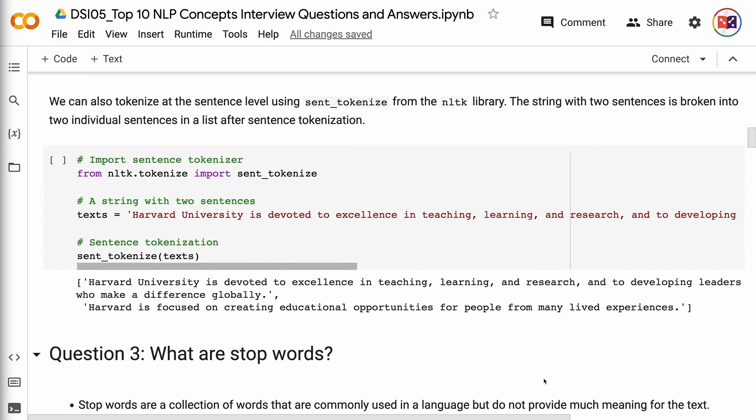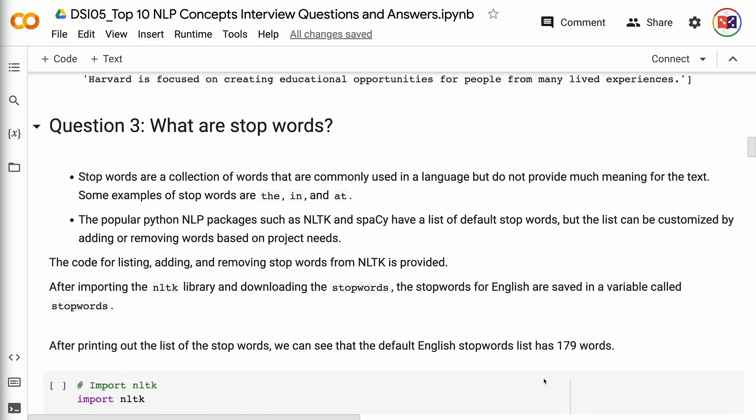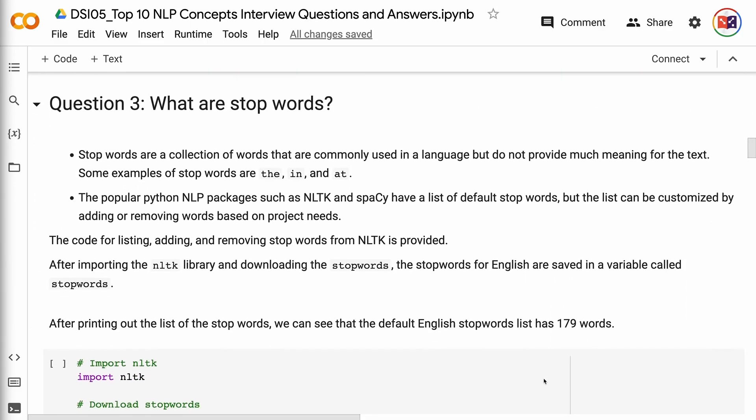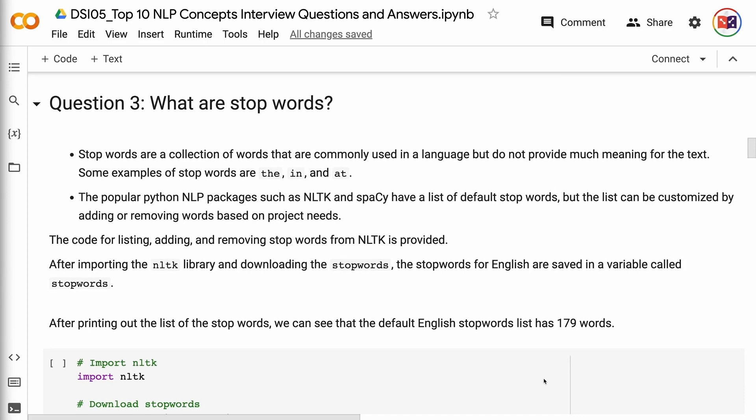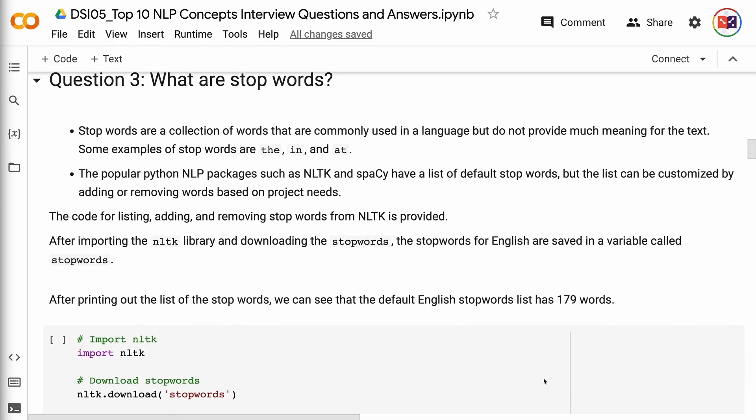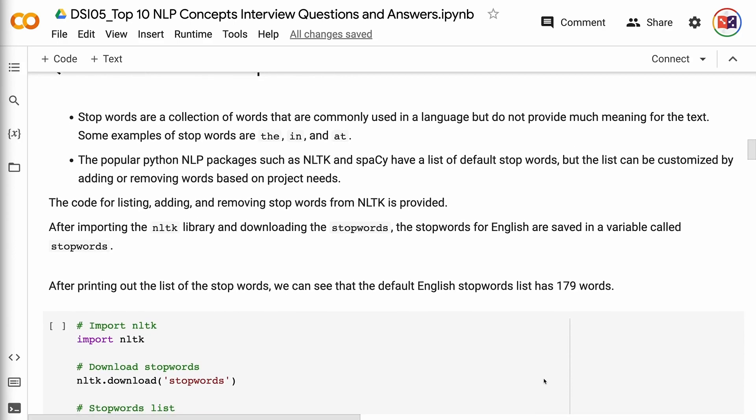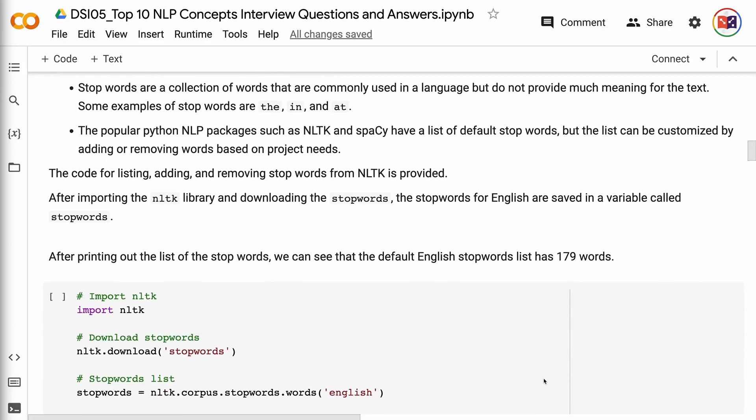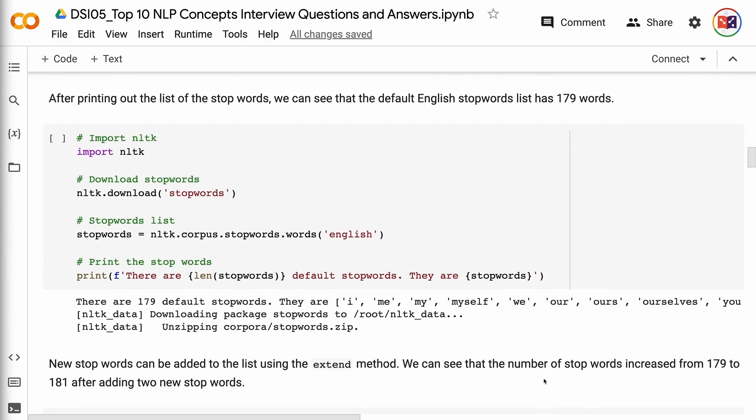Question 3: What are stop words? Stop words are a collection of words that are commonly used in a language but do not provide much meaning for the text. Some examples of stop words are the, in, and at. The popular Python NLP packages such as NLTK and Spacy have a list of default stop words, but the list can be customized by adding or removing words based on project needs. The code for listing, adding, and removing stop words from NLTK is provided. After importing the NLTK library and downloading the stop words, the stop words for English are saved in a variable called stopwords. After printing out the list of the stop words, we can see that the default English stopwords list has 179 words.